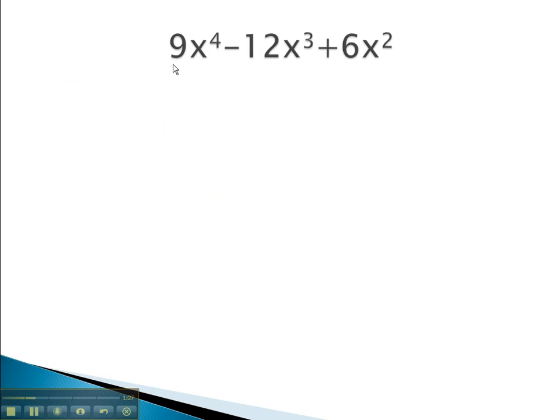In this problem, we see that 9, 12, and 6 are all divisible by 3. All the terms also have an x, and the lowest exponent is squared.